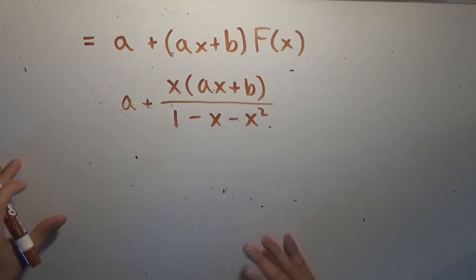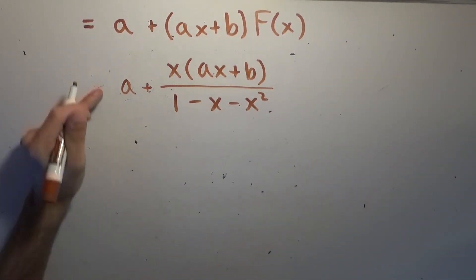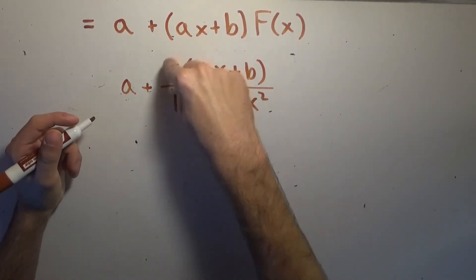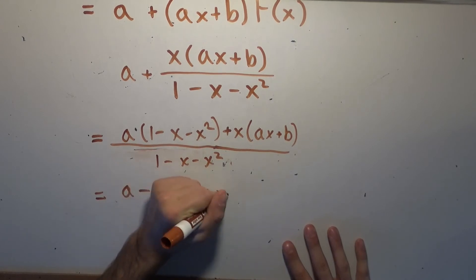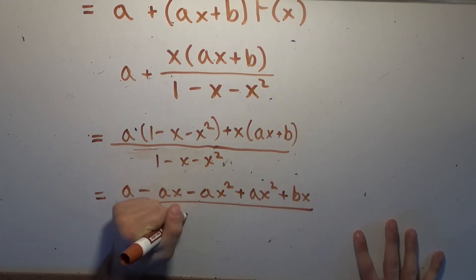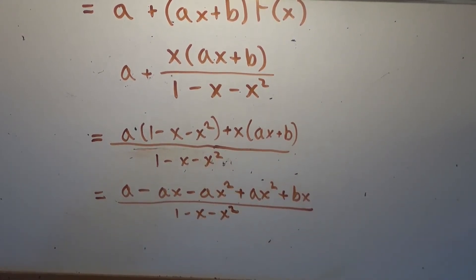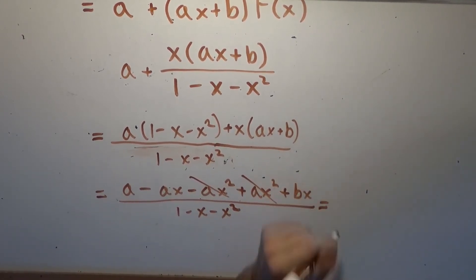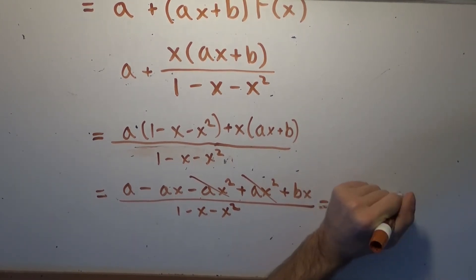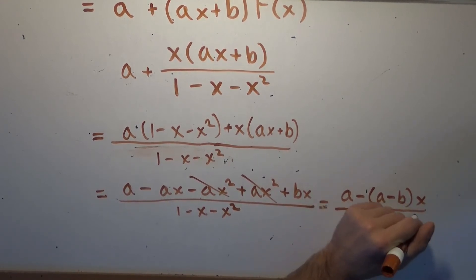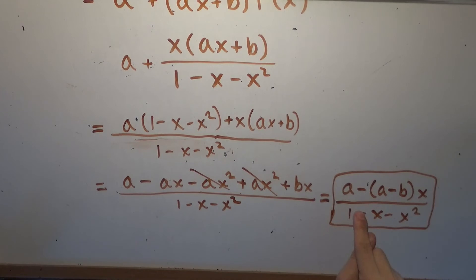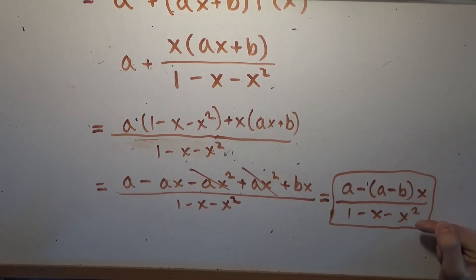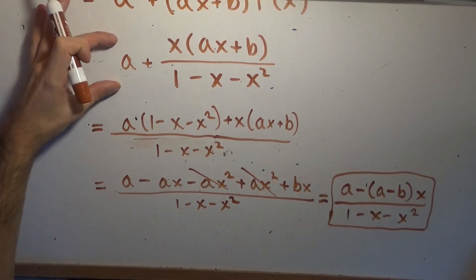Before the next example, let's simplify a little. We multiply A's term top and bottom by the denominator, then distribute x into the numerator. We get A minus Ax minus Ax² plus Ax² plus Bx, all over 1 minus x minus x squared. The Ax² terms cancel, leaving us with A minus (A minus B)x, all over 1 minus x minus x squared. This is a nicer form: no matter what two seed values you pick, you always get a linear numerator divided by the same quadratic denominator.